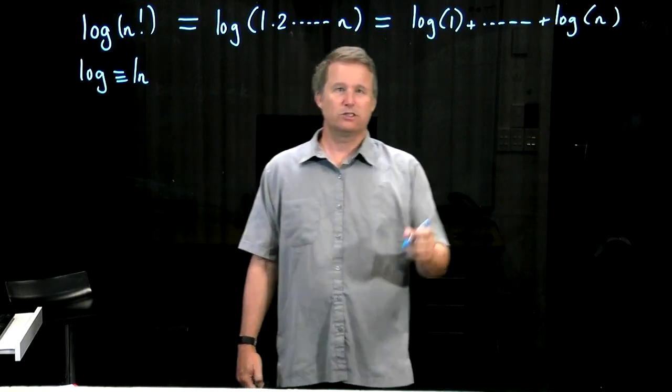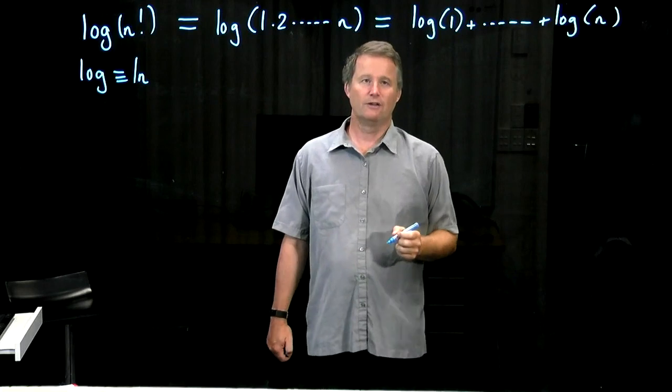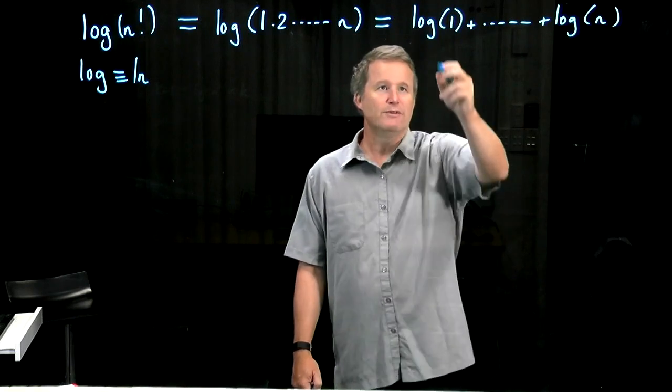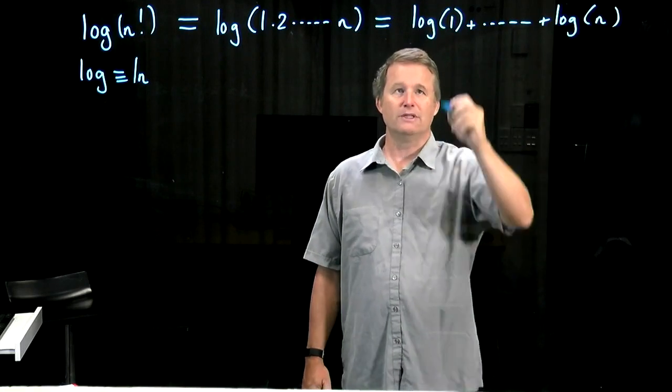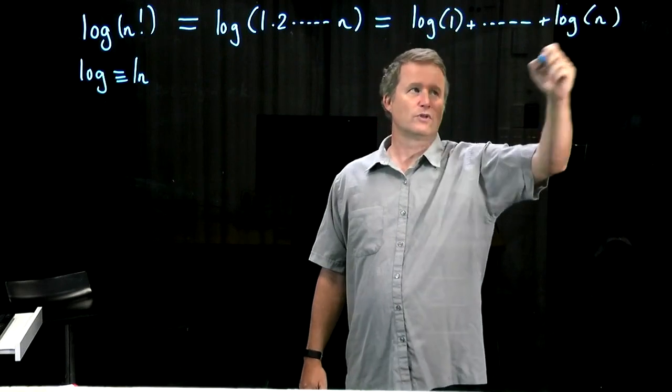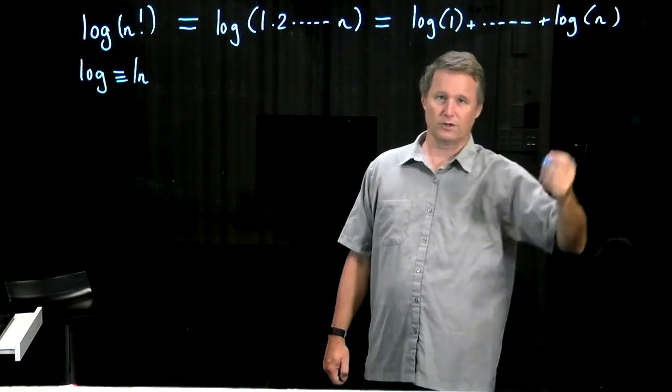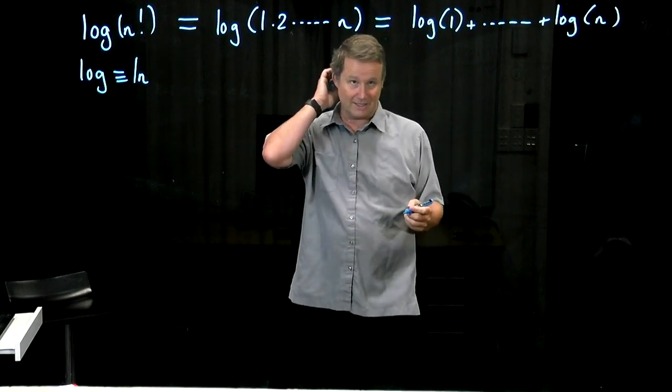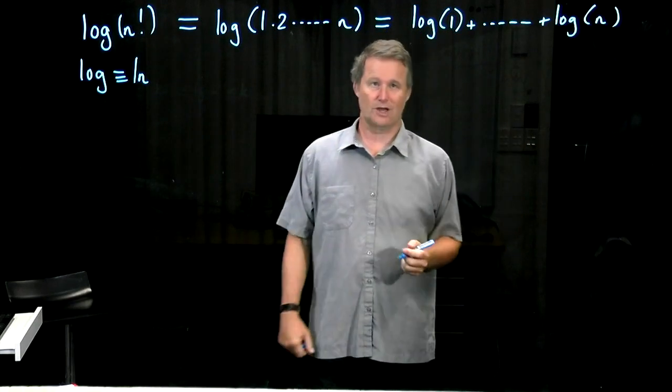How are we going to estimate the growth rate of that? It's the sum of n terms, but they vary quite a bit in size. This one is zero and this one is log n, which is going to infinity with n, so it's not immediately clear what the average term size is.